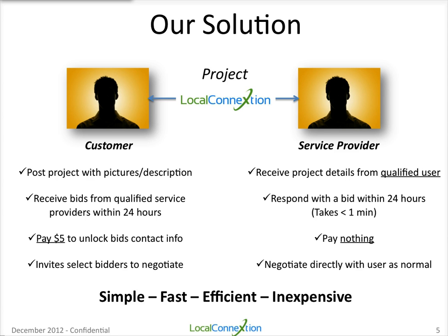For the customer, instead of having to call and ask the same questions over and over again, they can post a project within minutes using pictures, a description, and a title — and boom, it's there. They can start receiving bids from qualified service providers within 24 hours, and they only have to pay $5 to unlock all of their bids on that project. The $5 is a one-time fee that unlocks all bids so they can communicate with all the service providers who have bid on their project. They can also invite select bidders to negotiate. The customer is in complete control, in an organized fashion, and it's extremely efficient — easily worth the $5 that they have to pay.